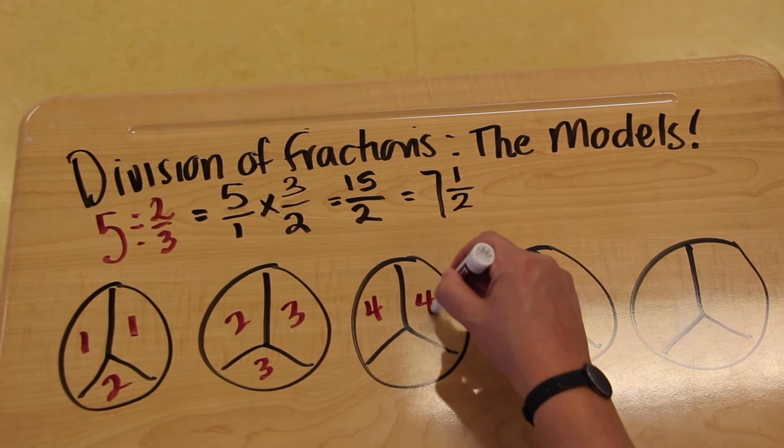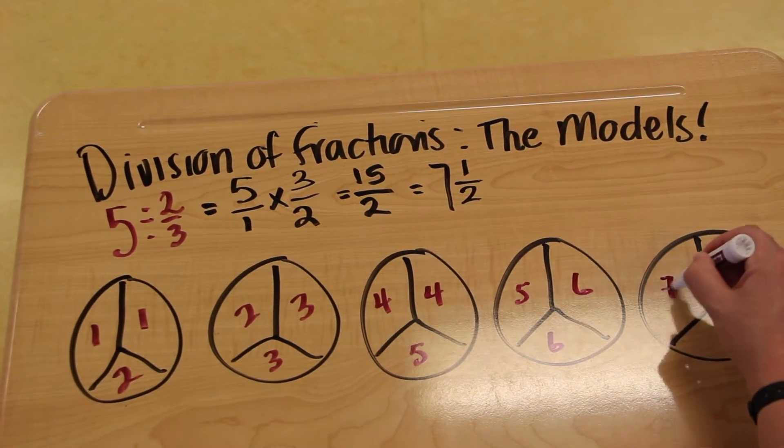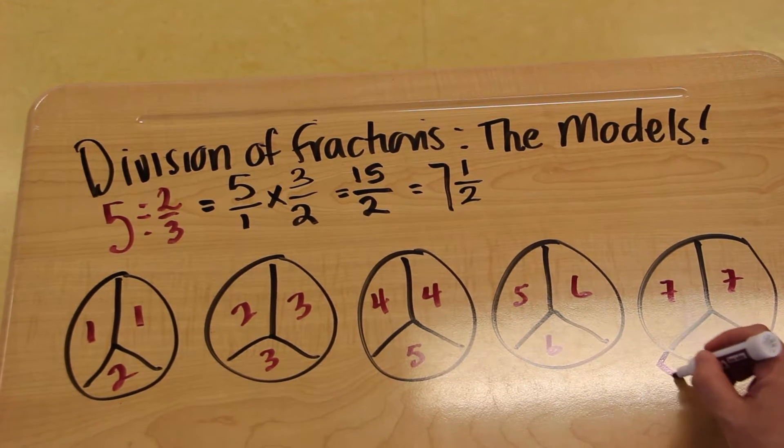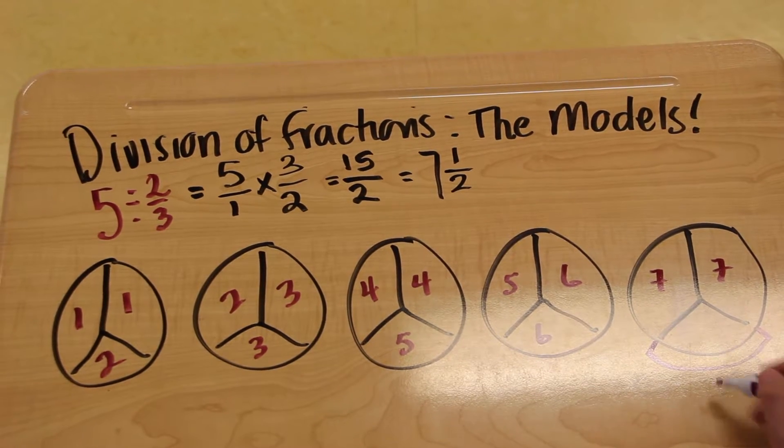Here's our second 2 third, 3rd, 4th, 5th, 6th, and 7th. And here we have a leftover one, which is 1 out of 2.